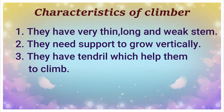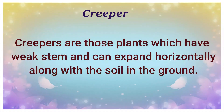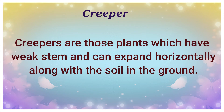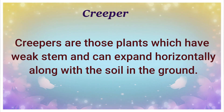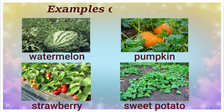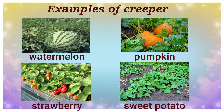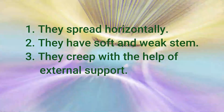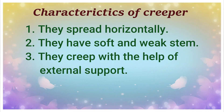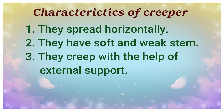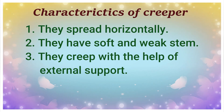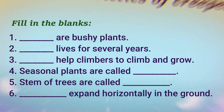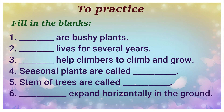The next type is creepers. Creepers are plants which have a weak stem and can expand horizontally along the soil on the ground. Examples include watermelon, pumpkin, strawberry, and sweet potatoes. Their characteristic features: they spread horizontally, have a soft and weak stem, and creep with the help of external support.